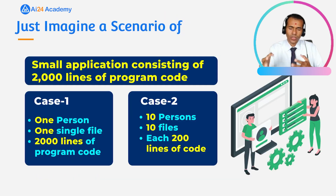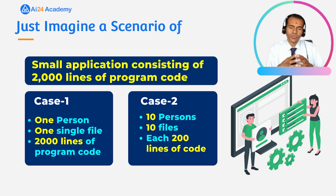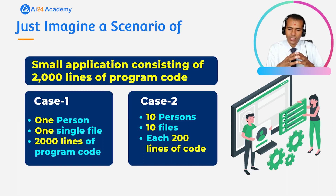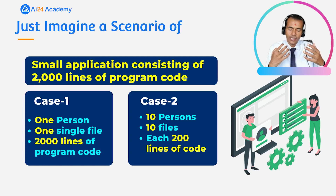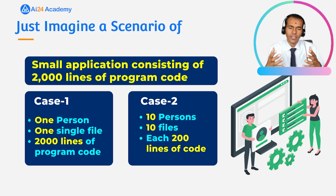For the fourth point, application development speed: in case one only one person is working, in case two 10 persons are working on the same application, so development is clearly faster in case two. We can conclude that if an application is divided into different parts or modules, we can work in parallel, development is faster, and we can reuse files in other applications.